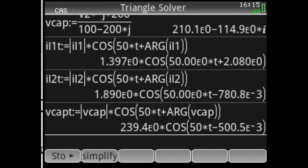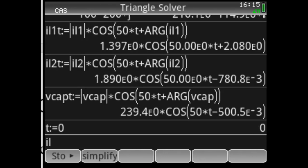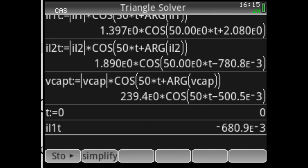But we want to know what are those values at t equals 0. Let me make t equals 0. IL1 as a function of time, that is the instantaneous value of that current at t equals 0 minus, which of course is equal to 0 plus, and that is -681 milliamps.